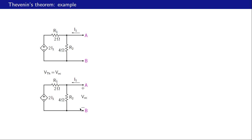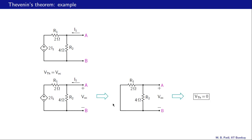In this open-circuit situation, the current i-one is zero, and therefore the voltage drop given by two times i-one is also zero. So we can replace this CCVS with a short circuit, and we find that v-oc is going to be zero volts. Therefore our Thevenin voltage v-th is zero volts.